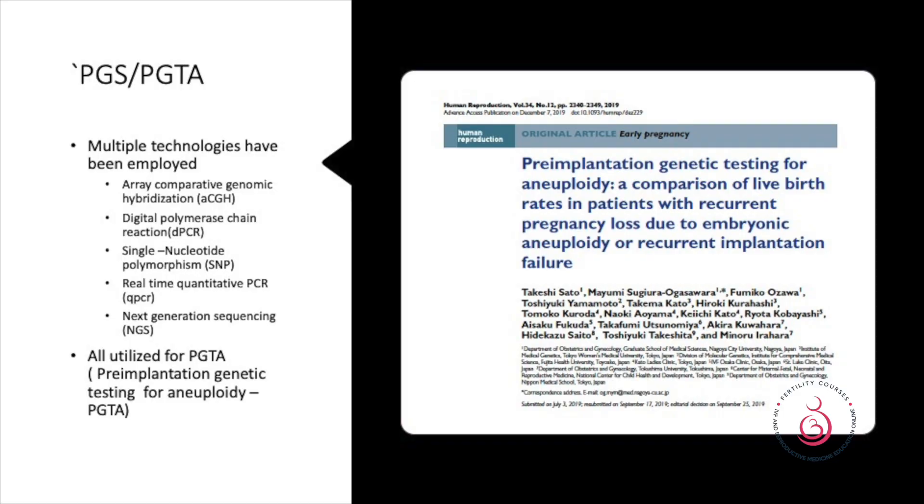Let's go back to the history. Multiple technologies have been employed: array comparative genomic hybridization (array CGH), digital PCR, single nucleotide polymorphism (SNP) arrays, real-time quantitative PCR, and now next-generation sequencing. To clarify all the terminologies, it was renamed as PGTA — pre-implantation genetic testing for aneuploidy.